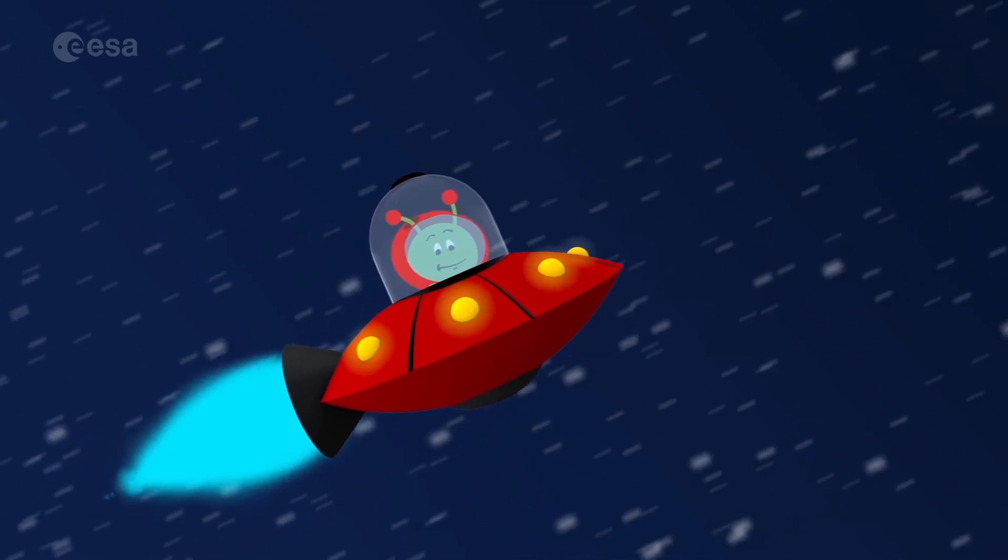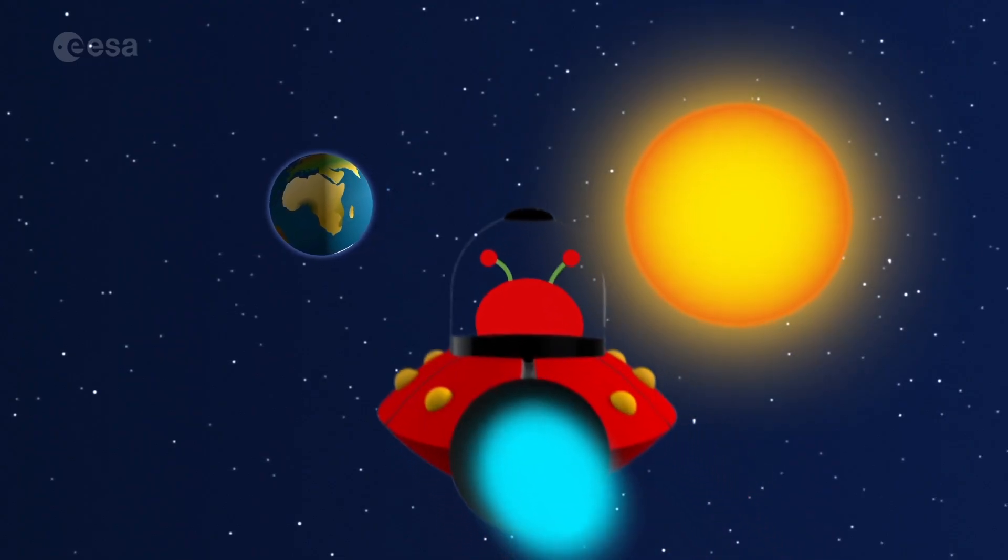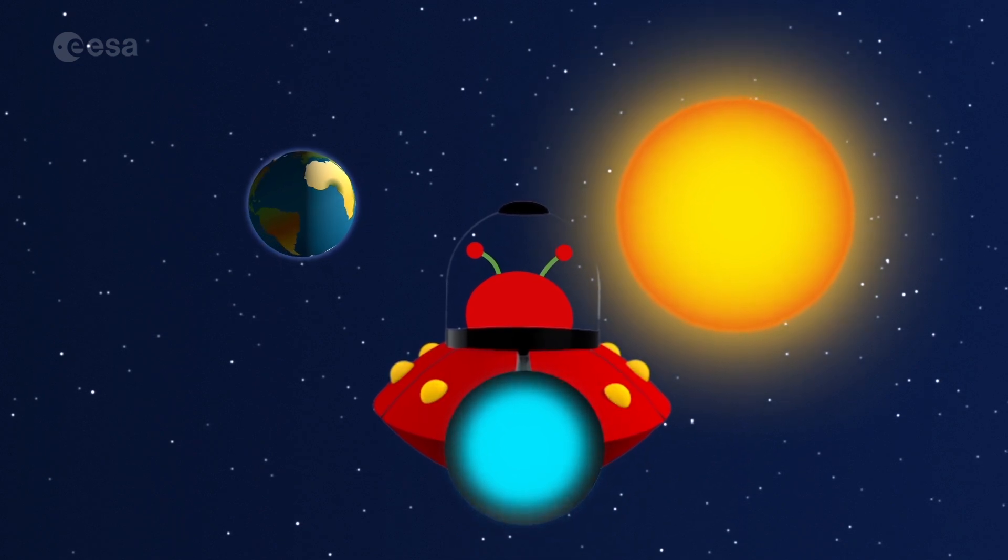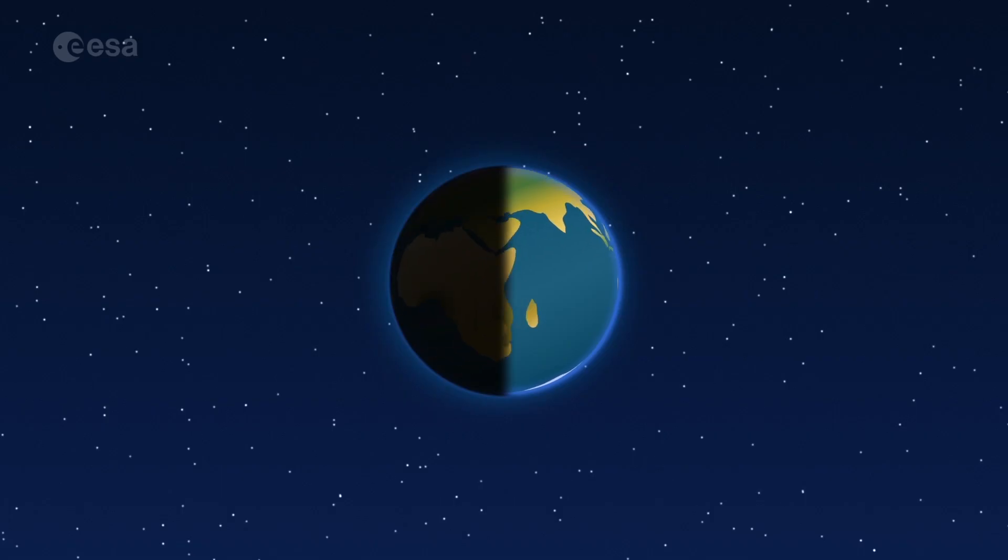To action! From space, we can see that the Earth is spinning. It's daytime for the side that is facing the sun. On the other side, it's nighttime.